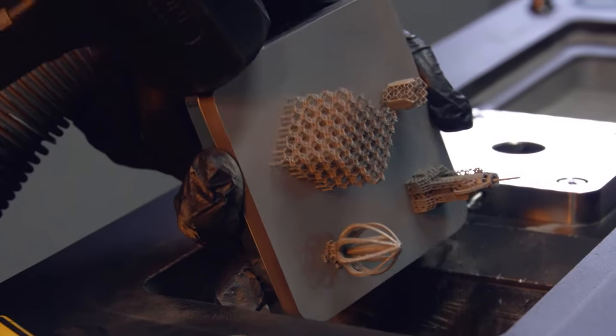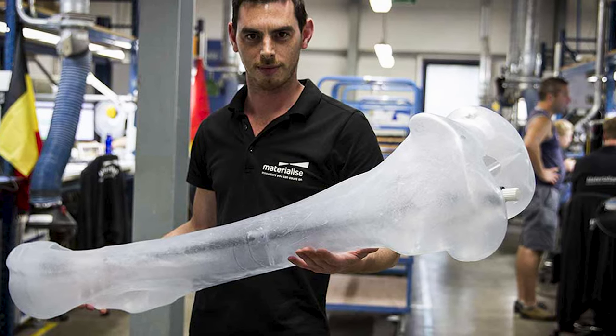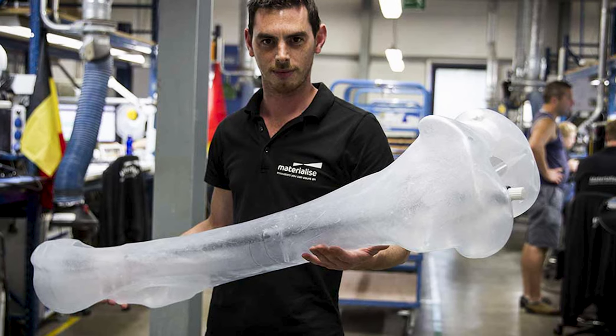The printers are also used for printing massive objects, such as this mammoth bone that was printed by Materialise in cooperation with the Royal Belgian Institute of Natural Sciences in Brussels.